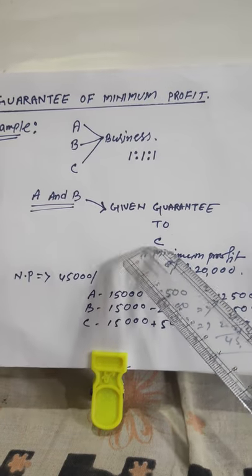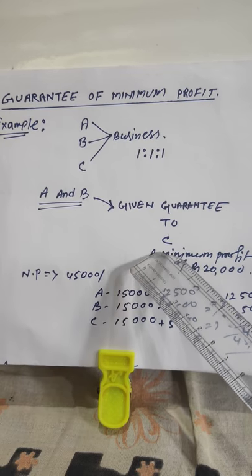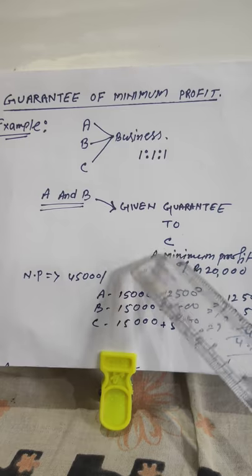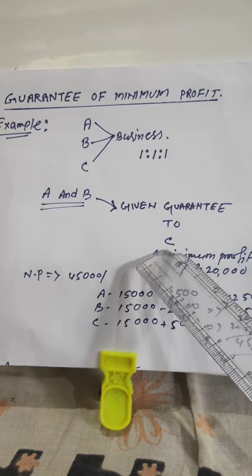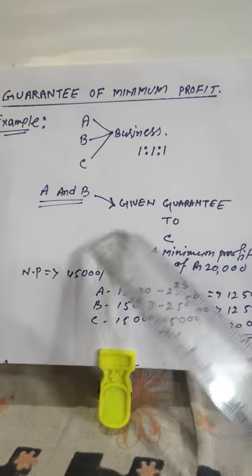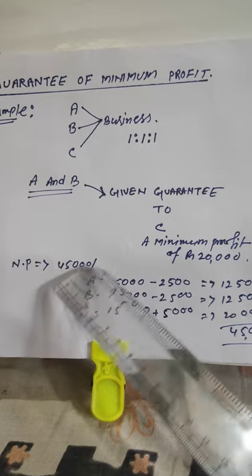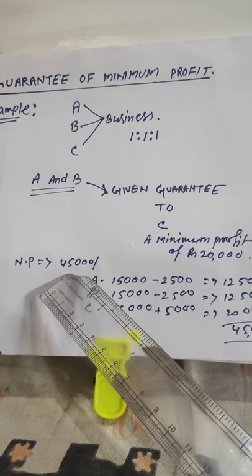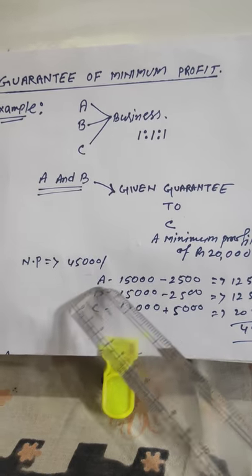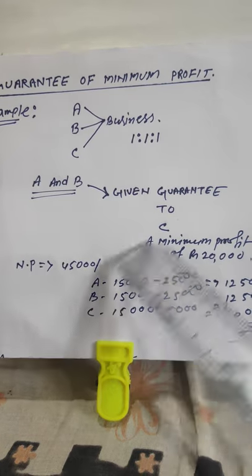For example, suppose C is getting Rs. 18,000, but C has a guarantee of Rs. 20,000. In that case, C is getting Rs. 2,000 less, so that Rs. 2,000 will be given to C by A and B in their profit sharing ratio of 1:1. Now suppose in a particular year the net profit was Rs. 45,000. The ratio is 1:1:1, so all three partners are supposed to get Rs. 15,000 each — 15,000 × 3 = 45,000.